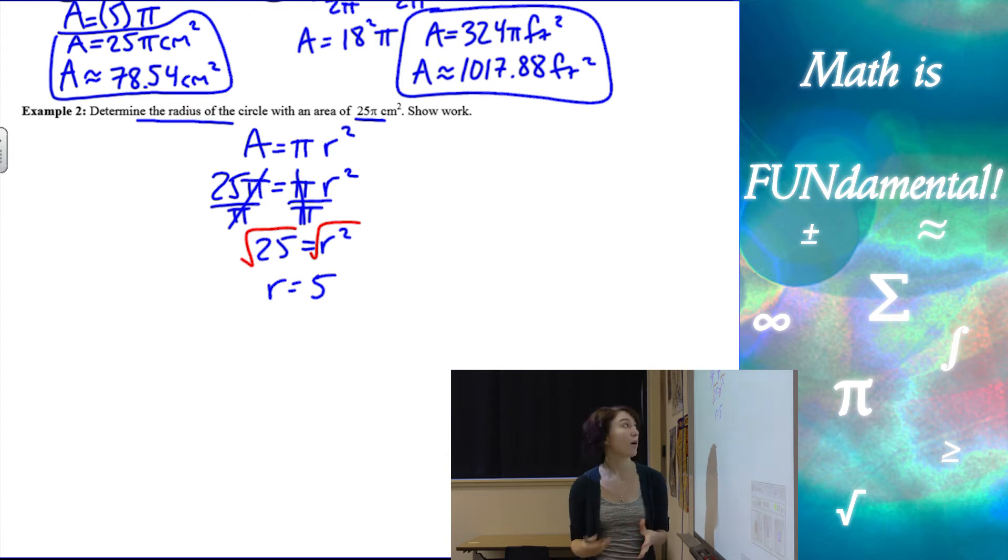Now technically the square root of 25, or r squared equals 25, could also be a radius of negative 5. But we can't have negative lengths in real life. So we want to go with just the positive. And then of course, don't forget your units.